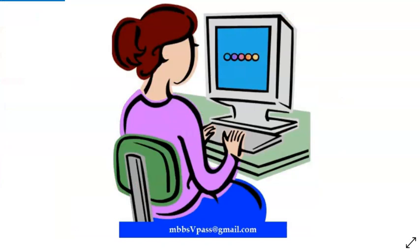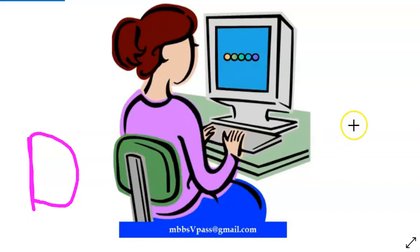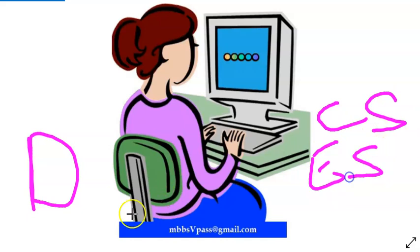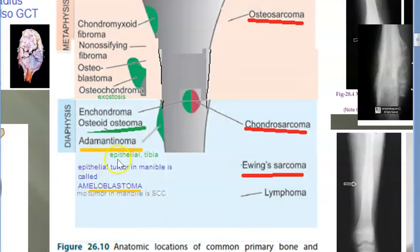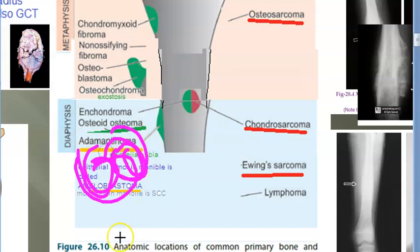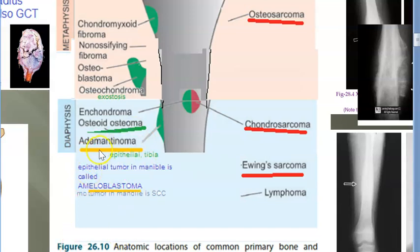On the malignant side of diaphyseal tumors, you have chondrosarcoma and Ewing's sarcoma — very important to know. Lymphoma is also mentioned for the diaphysis. On the benign diaphyseal side, remember osteoid osteoma and adamantinoma.